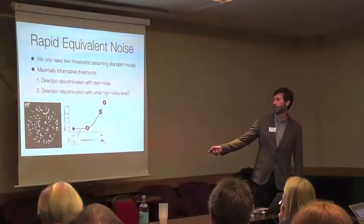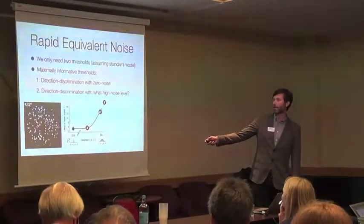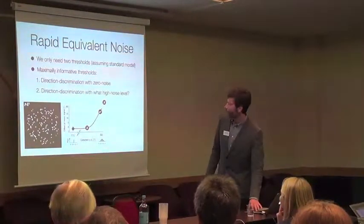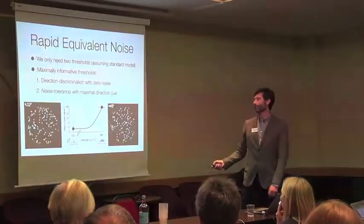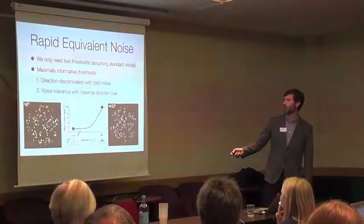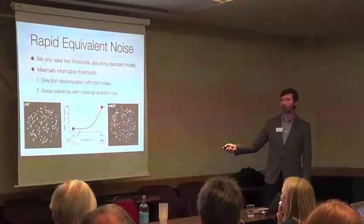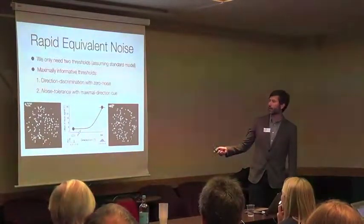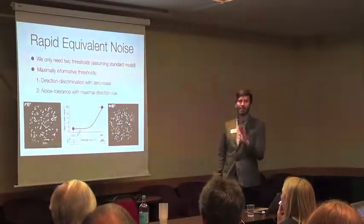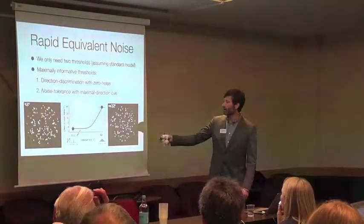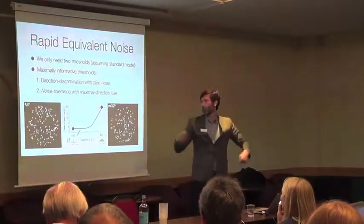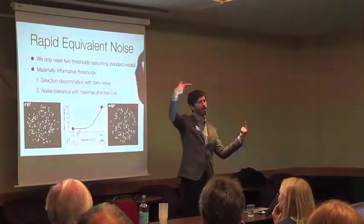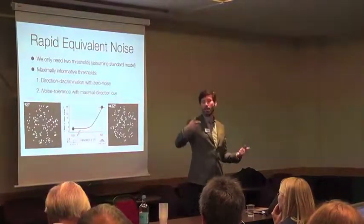Just to say, this is the zero noise condition. Here, this is the standard thing - maybe this would be Quest running - different offsets to determine the minimum amount you need. Here's what we came up with as a way to solve that. Rather than measuring the directional offset required, we get people to do a coarse direction discrimination, left or right in this case. But rather than manipulating the offset as here, we manipulate the amount of noise. The idea is, normally we're trying to bracket an equivalent noise function by all these different thresholds in this direction. What we're going to do now is only do that once, and then we're going to bracket noise from the other direction.